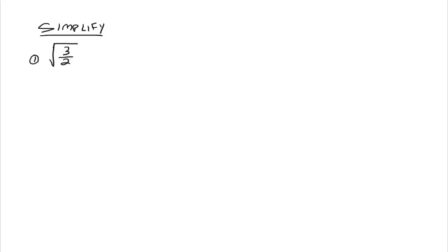So we want to simplify the square root of 3 halves. First thing we notice is that there's a fraction under the radical, under the square root sign. Officially, that's not in simplified form. So to stick with the current convention, we will try to rewrite this a different way. We can rewrite this as the square root of 3 over the square root of 2.